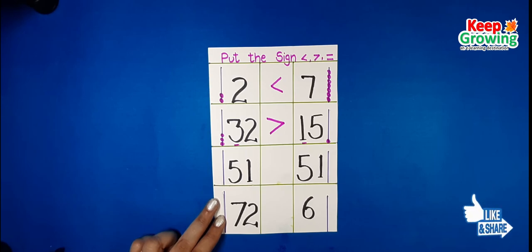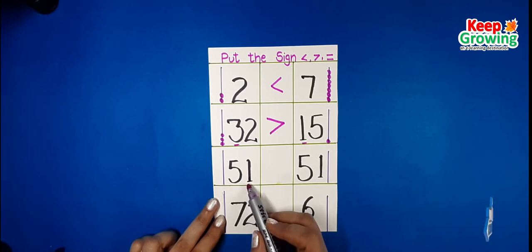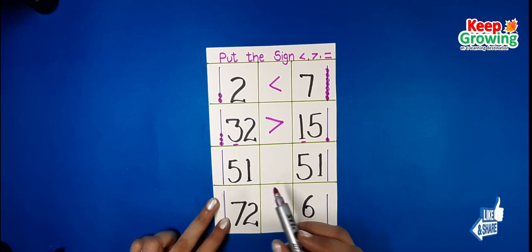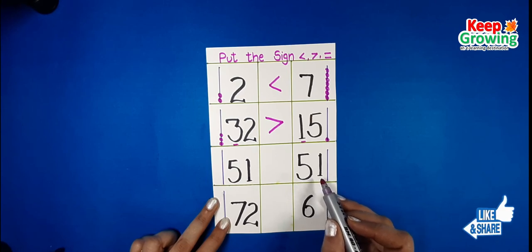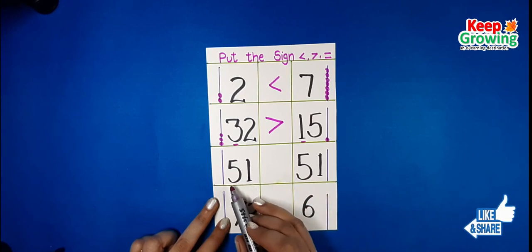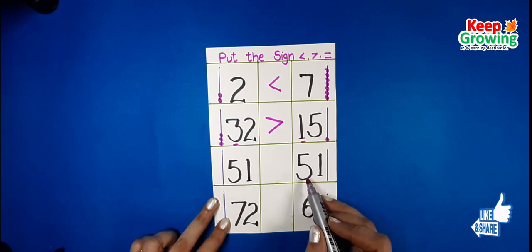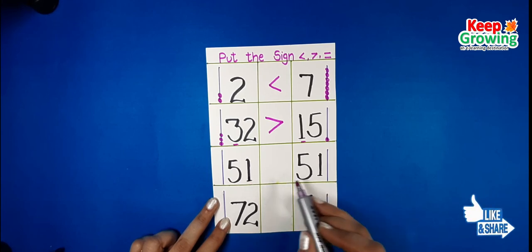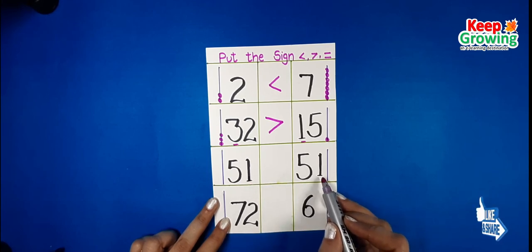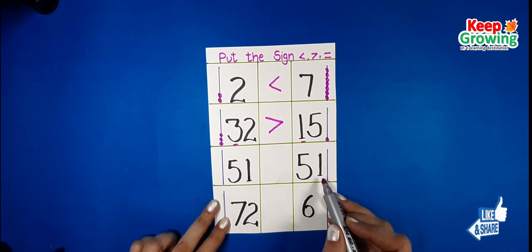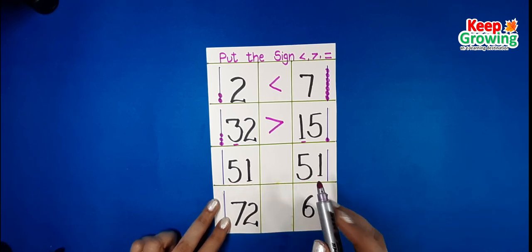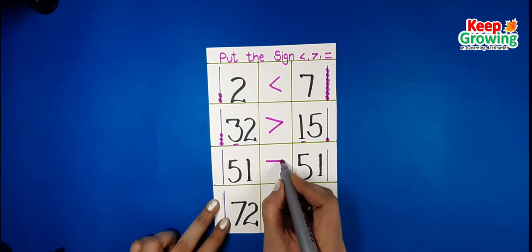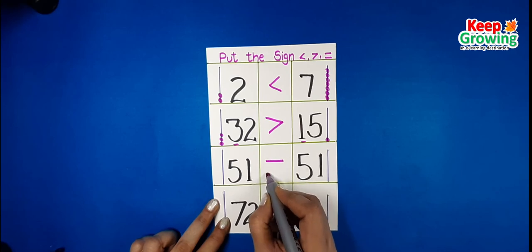Now we will have to compare 51 and 51. The tens place digit of both the numbers are the same, and the ones place digit of both the numbers are also exactly the same. It means both the numbers are equal. We put the sign of equals to between them.